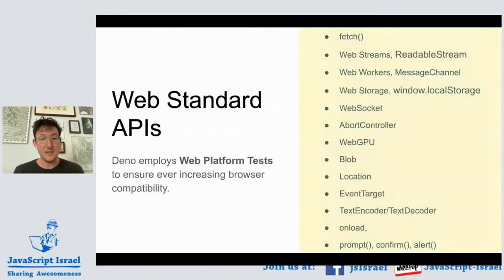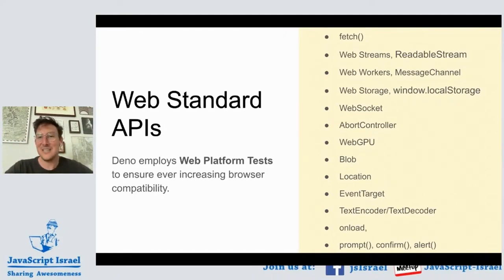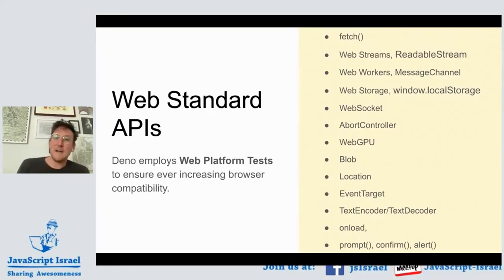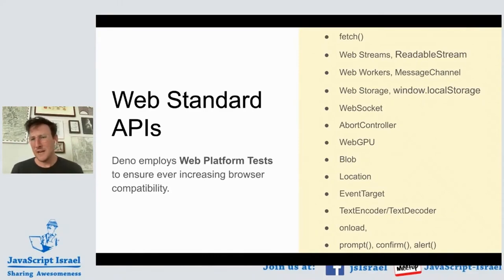Something different comparing Node and Deno is that Deno has a different set of APIs and tries very hard to be web-compatible. All of these web-standard APIs are available in Deno, and we take this very seriously — Deno runs the web platform tests that browsers run to ensure these are not just look-alike APIs but exactly what you'd expect in web browsers. You have fetch out of the box, web streams, web workers, message channel, local storage, WebSocket, and AbortController.